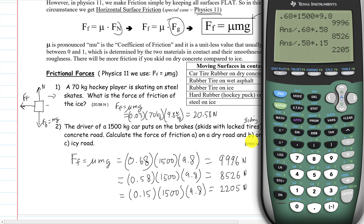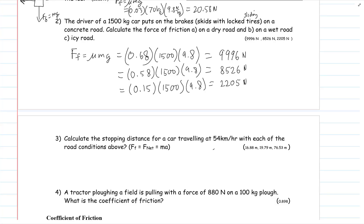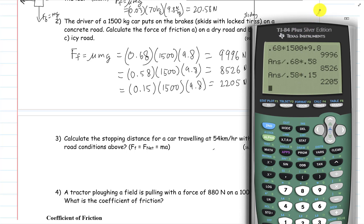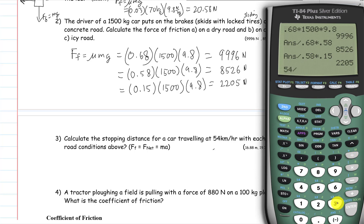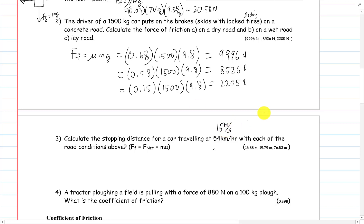Question number three on the back says calculate the stopping distance for a car traveling at 54 kilometers per hour with each of the road conditions. So 54 divided by 3.6 has a speed of 15 meters per second. The car is traveling this way at a speed but trying to slow down, so the acceleration is this way. There's a normal force up, force of gravity down. There's only one force trying to stop it, that's the frictional force that way. There's nothing that keeps it moving because of Newton's first law, inertia. Frictional force is the only one trying to stop it, so sum of the forces equals F net equals ma, and that's the force of friction equals ma.